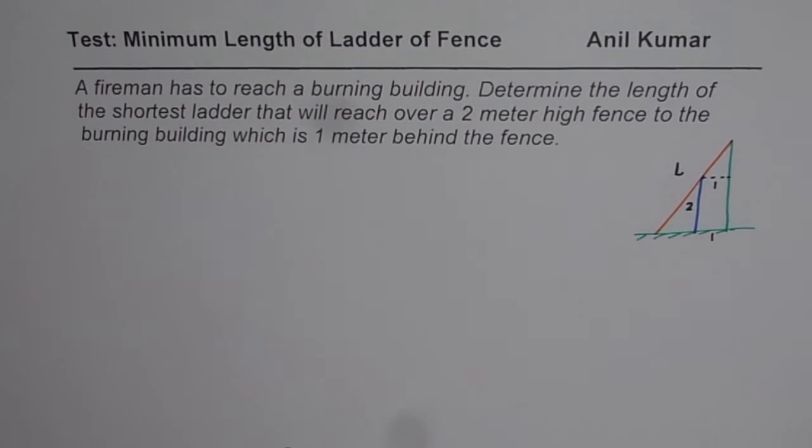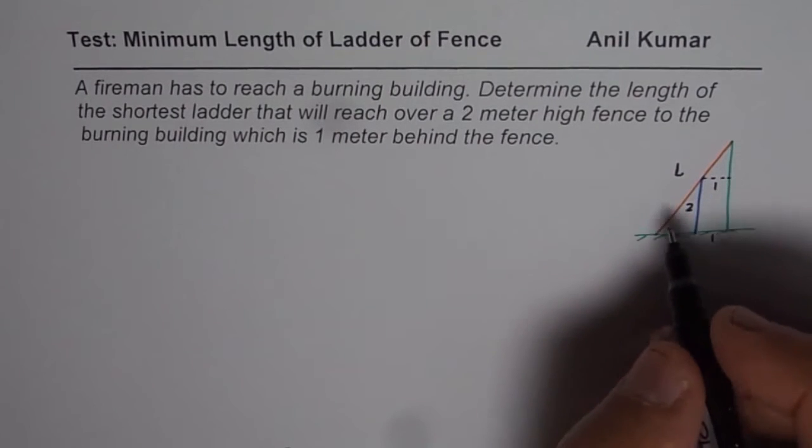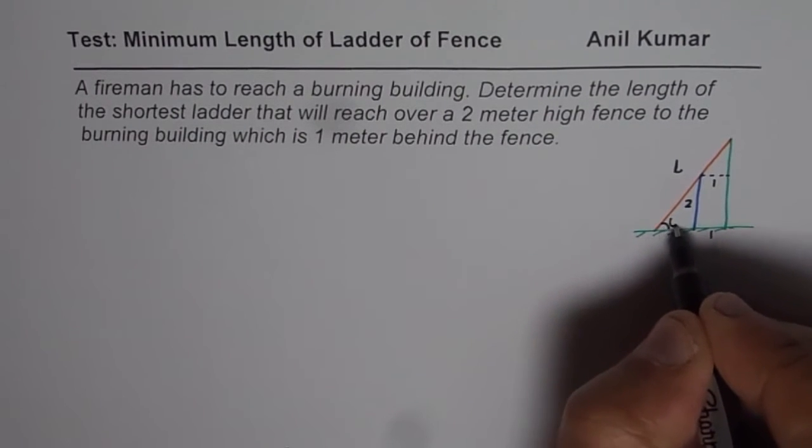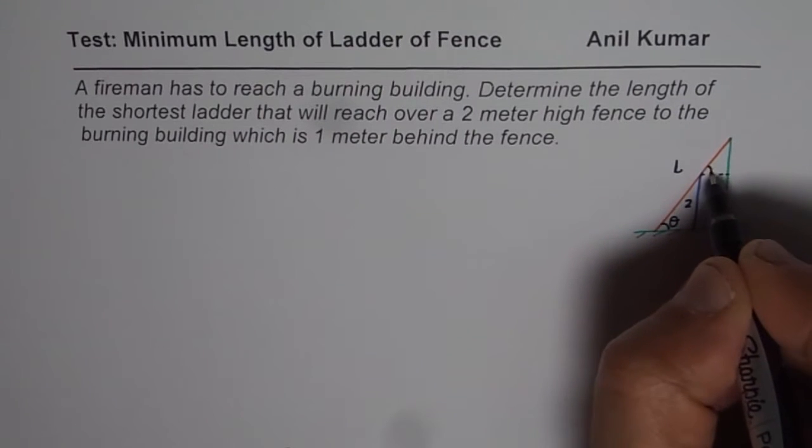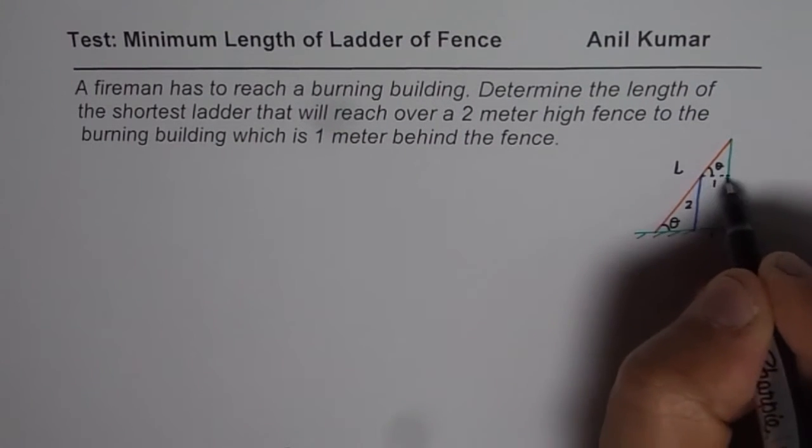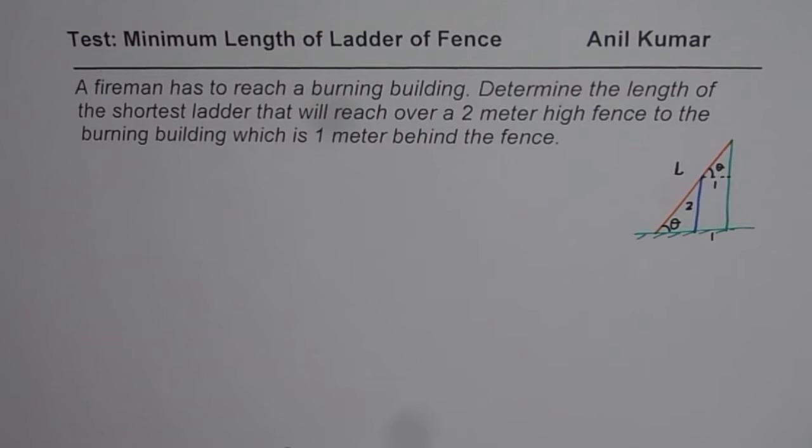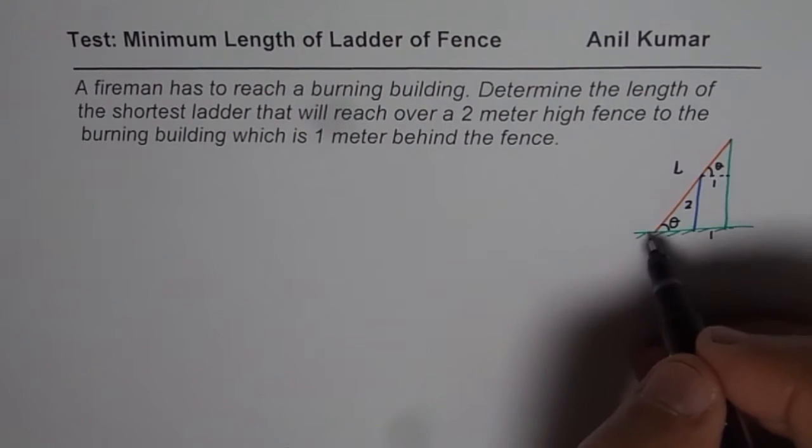Now how to find it? It is interesting to note that the angle here will be same as the angle at that place. Both are with the horizontal for the leaning ladder. Now we can use trigonometric functions to find the length.